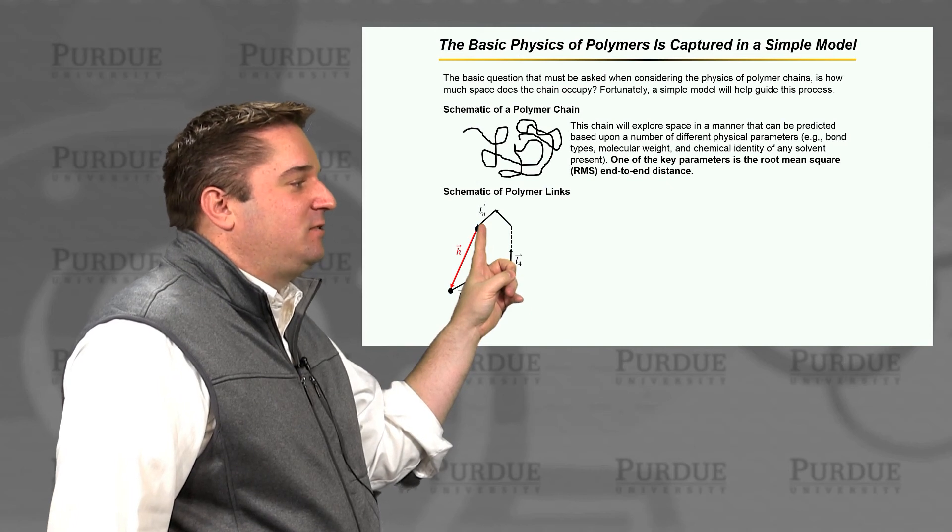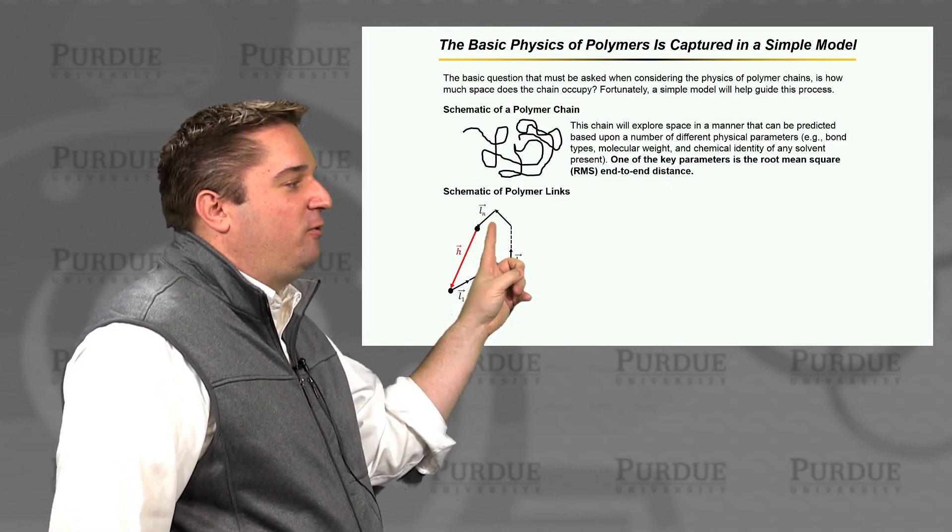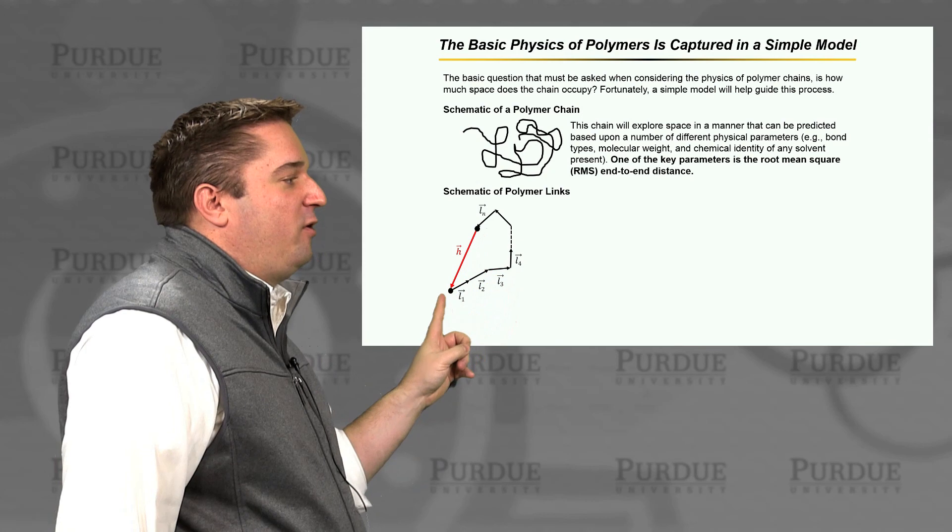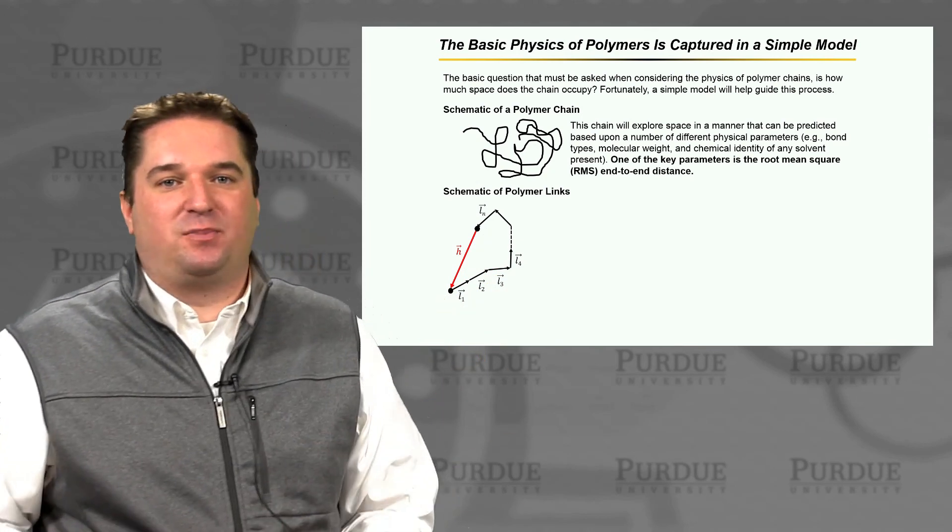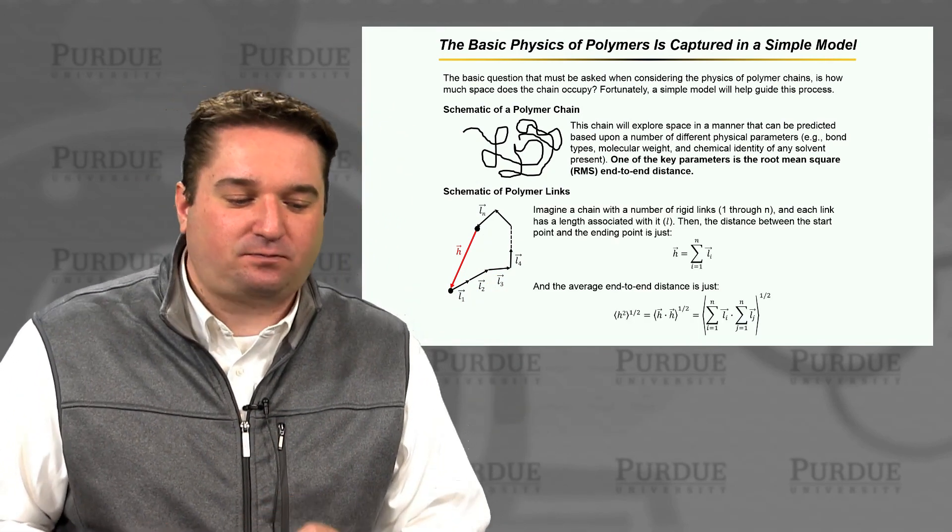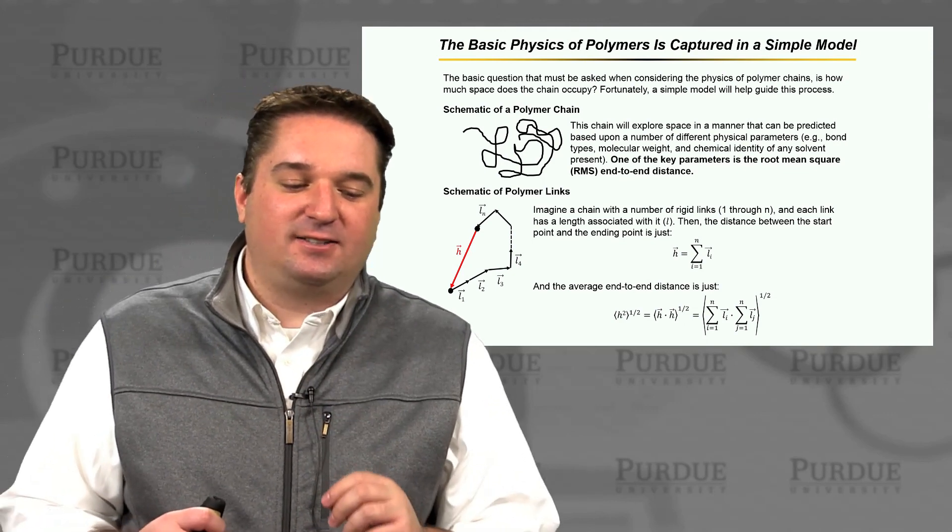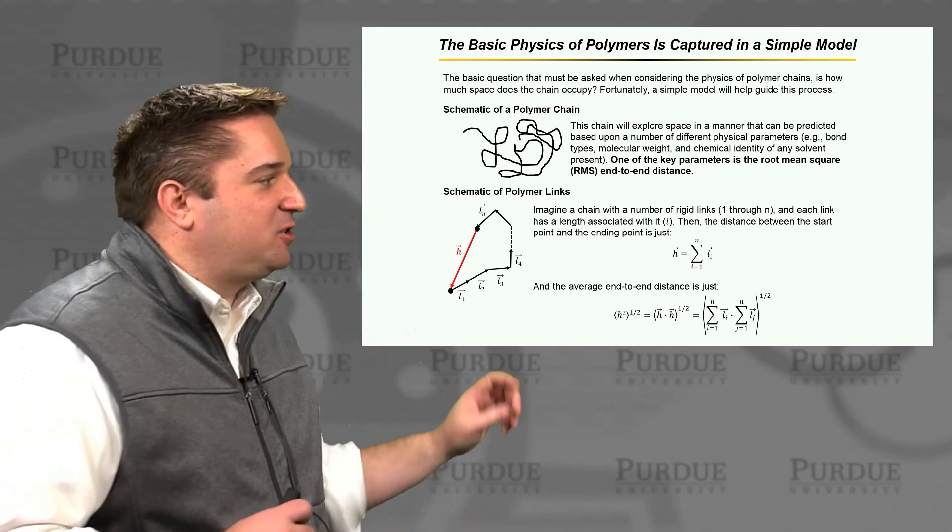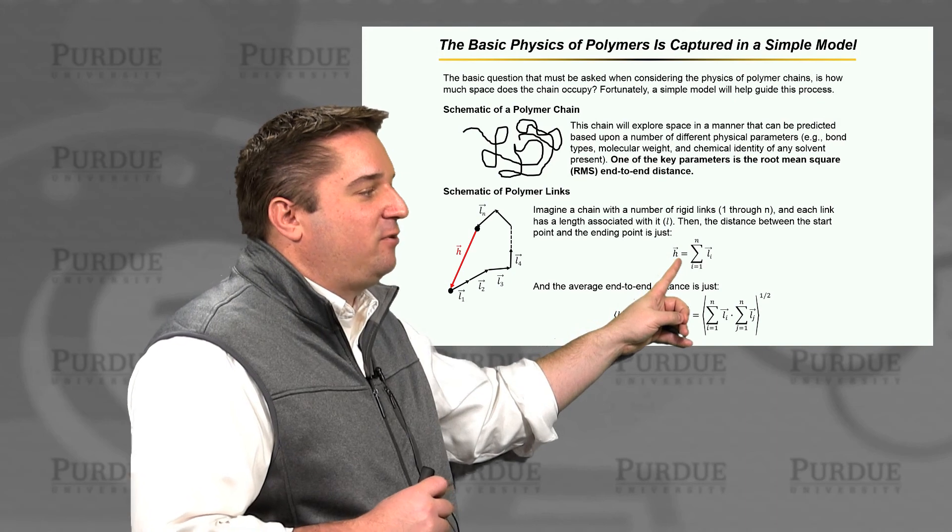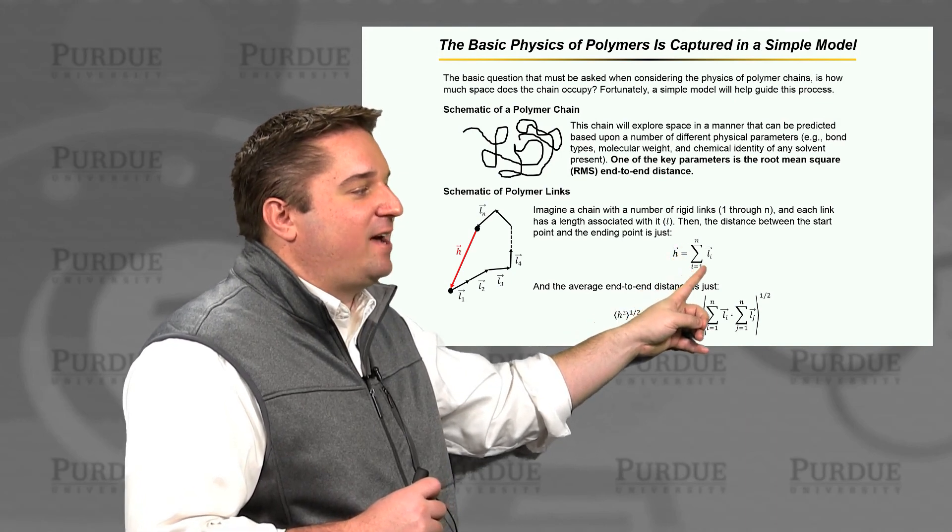And the end-to-end distance is the distance from this final where the vector ends from where it stops. So that's what we're going to symbolize by the h. And we can say that that end-to-end distance must just be the summation of all i, from i equals 1 to n, of these Li vectors.